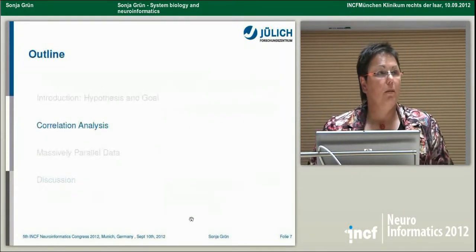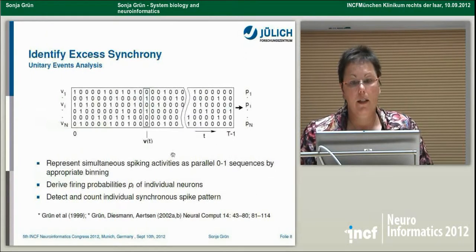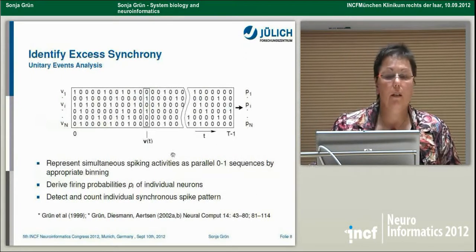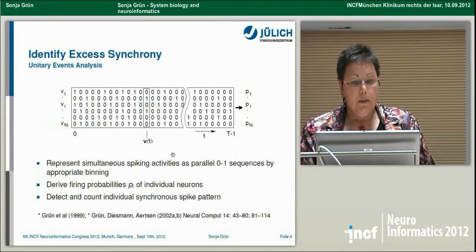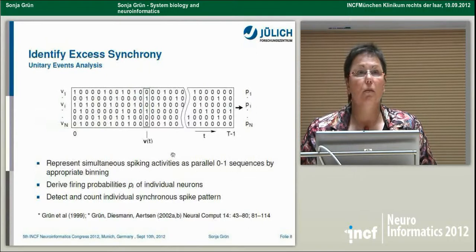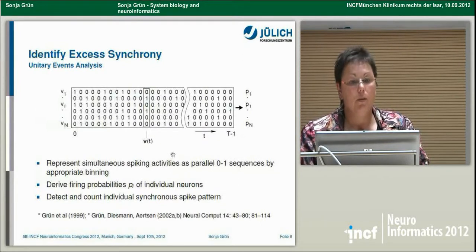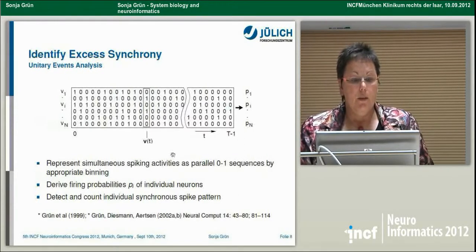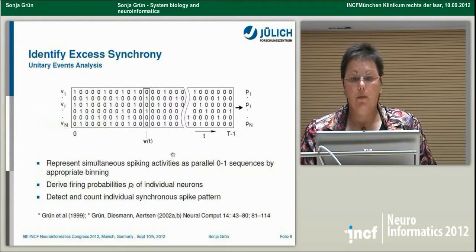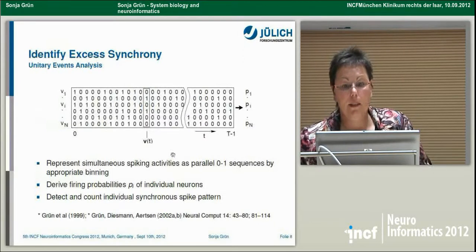About 15 years ago I started developing an analysis method we call unitary event analysis. If you record neurons in parallel and represent simultaneous spiking activities as parallel 0-1 sequences by appropriate binning — say one millisecond bins — you end up with 0s and 1s, where 1 indicates spikes. You can then derive firing probabilities of individual neurons by a simple estimate: the number of spikes divided by the number of possibilities.